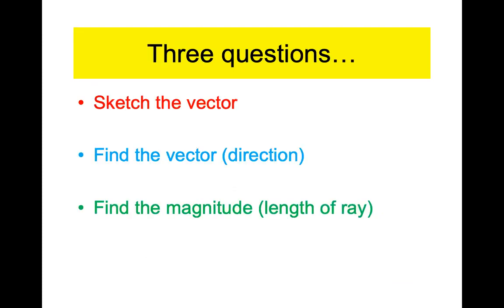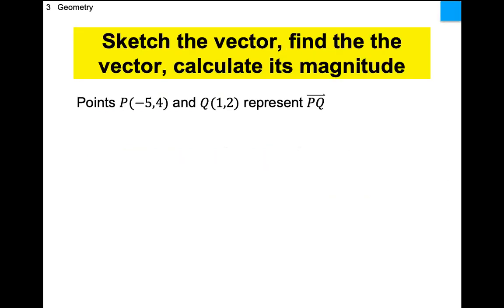Tonight for homework they're going to ask you to do three things: make a picture, find the vector — which means the direction — and find the magnitude. When it says 'find the vector,' they're asking you the direction. The direction is written as kind of like slope but not slope, written as an ordered pair. Find the magnitude — that's the length. Sketching the vector is easy, finding the direction requires no math, just counting squares or subtracting, and the magnitude requires the distance formula.